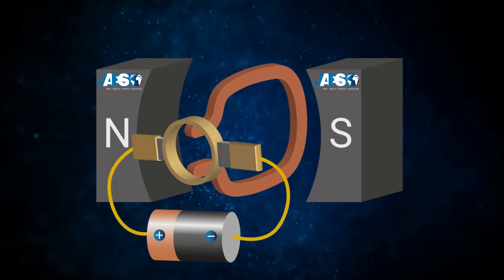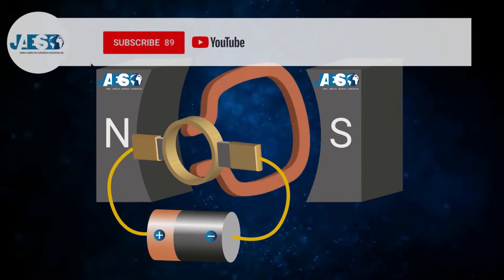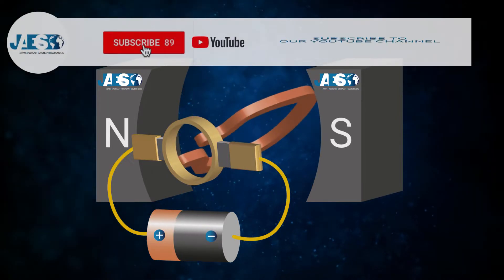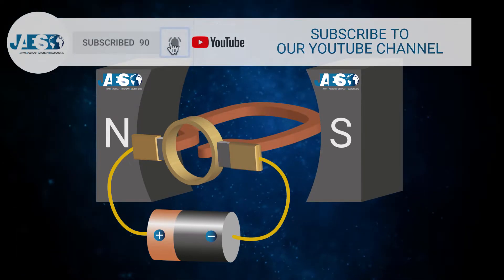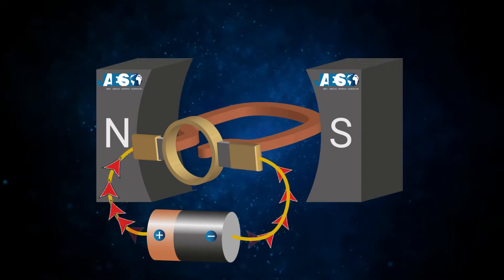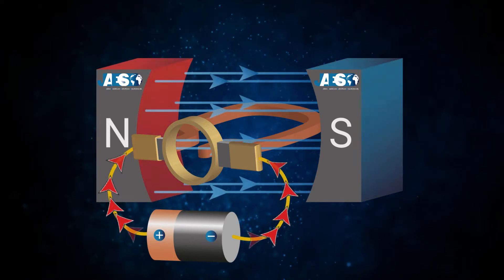Here again, the Lorentz force is responsible for the rotation of the copper coil. In fact, when the electricity flows through the coil, an electromagnetic force acts on it.